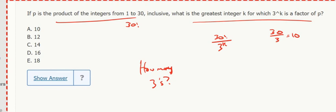9 and also 18. Every multiple of 9 has another 3 in it. So how many multiples of 9? 3, that's 9, 18, 27. I get another one from 9, another one from 18, another one from 27. That's 3 more.